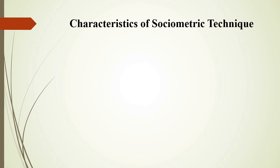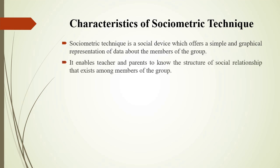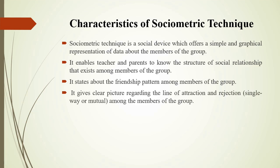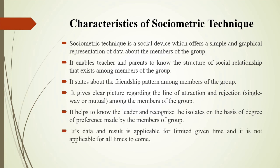Characteristics of Sociometric Technique: It is a social device which offers a simple and graphical representation of data about the members of the group. It enables teachers and parents to know the structure of social relationships that exist among members of the group. It states the friendship pattern among members of the group, and gives a clear picture regarding the lines of attraction and rejection. It helps to identify the leader and recognize isolates based on degree of preference. Its data and results are applicable for a limited given time and not for all times to come.